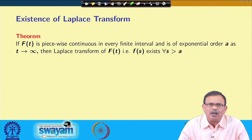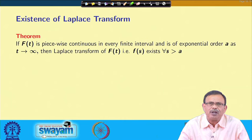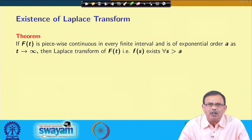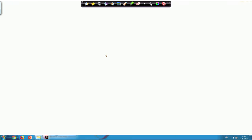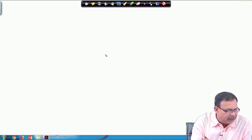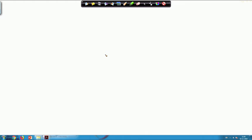So, two conditions basically: if a function f(t) is piecewise continuous in some finite interval and is of exponential order a, then the Laplace transform of that function exists and that is F(s) for all s greater than c. Now let us see the proof of this theorem. It is given that f(t) is a piecewise continuous function in every finite interval and is of exponential order alpha.